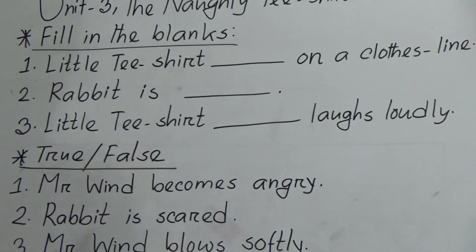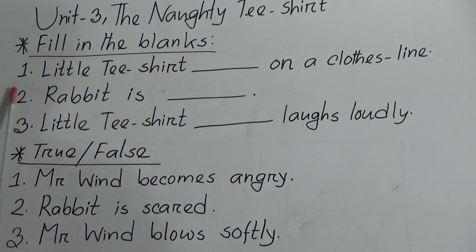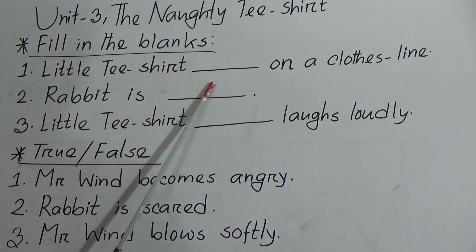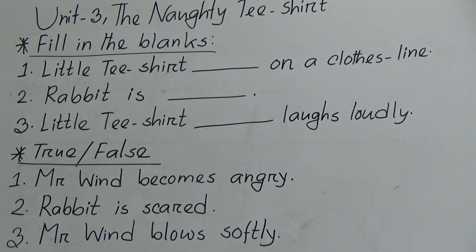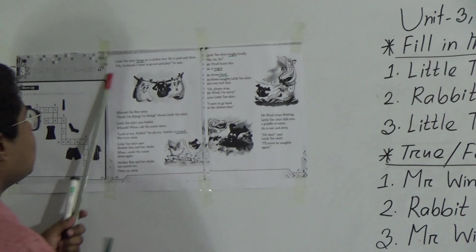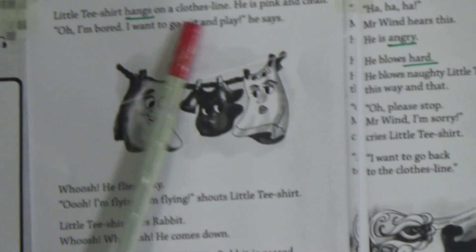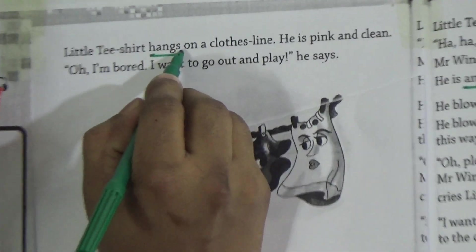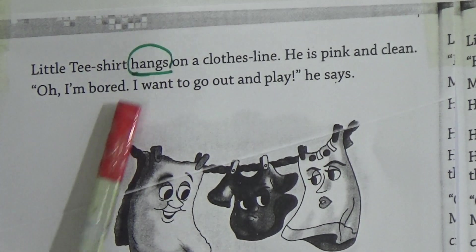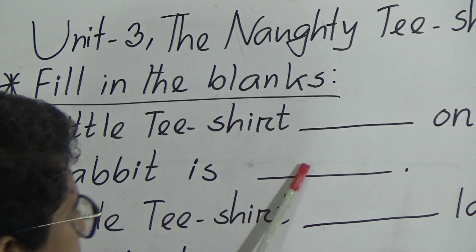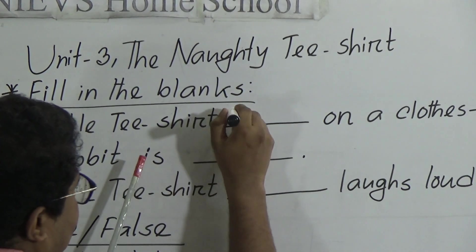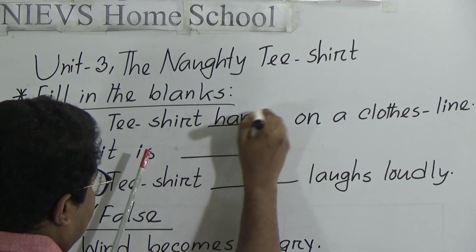You can see Unit 3, 'The Naughty T-Shirt,' fill in the blanks. Number one: little t-shirt ___ on a clothesline. Let's go to the text. You can see: 'Little t-shirt hangs on a clothesline.' So in this sentence the word 'hangs' is missing. Little t-shirt hangs on a clothesline — so in the gap we will write 'hangs.'